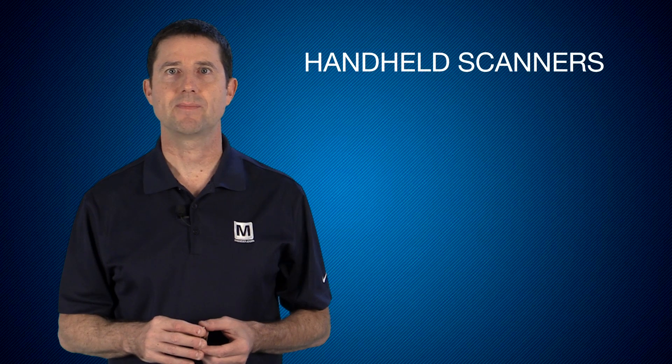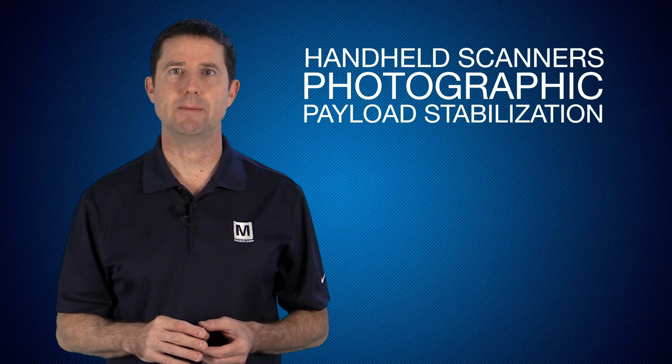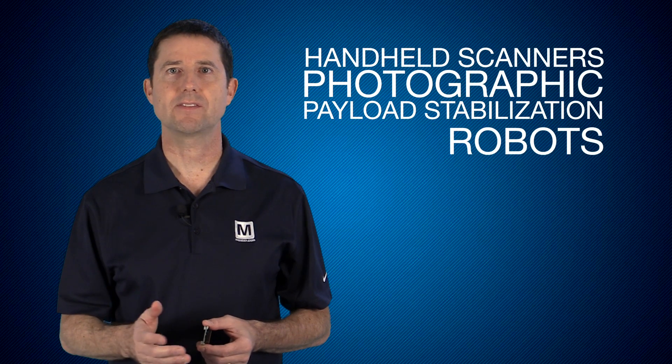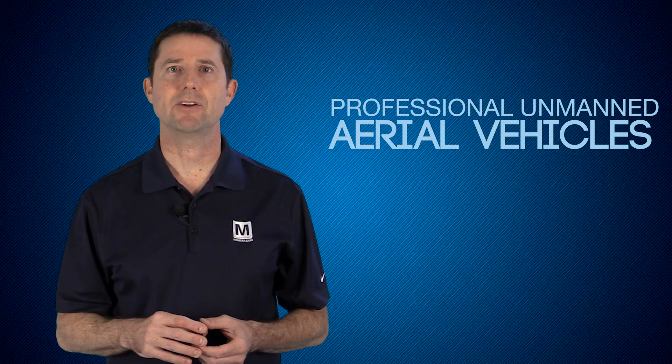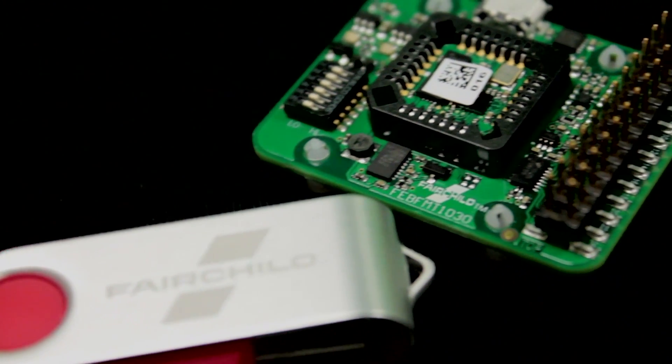handheld scanners, photographic and payload stabilization, robots, autonomous agriculture, and professional unmanned aerial vehicles. Fairchild's FMT-1000 kit - the ability to sense motion, the power to amaze.